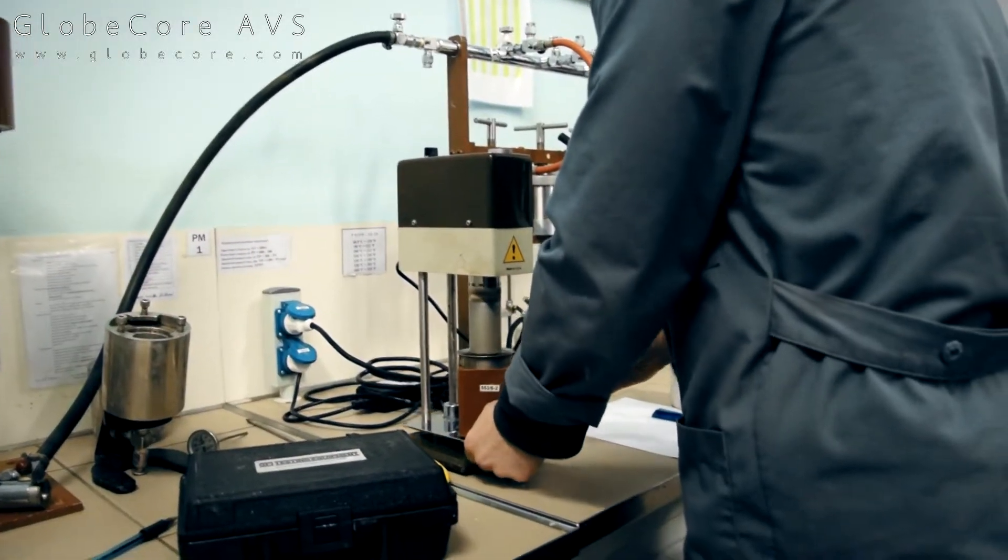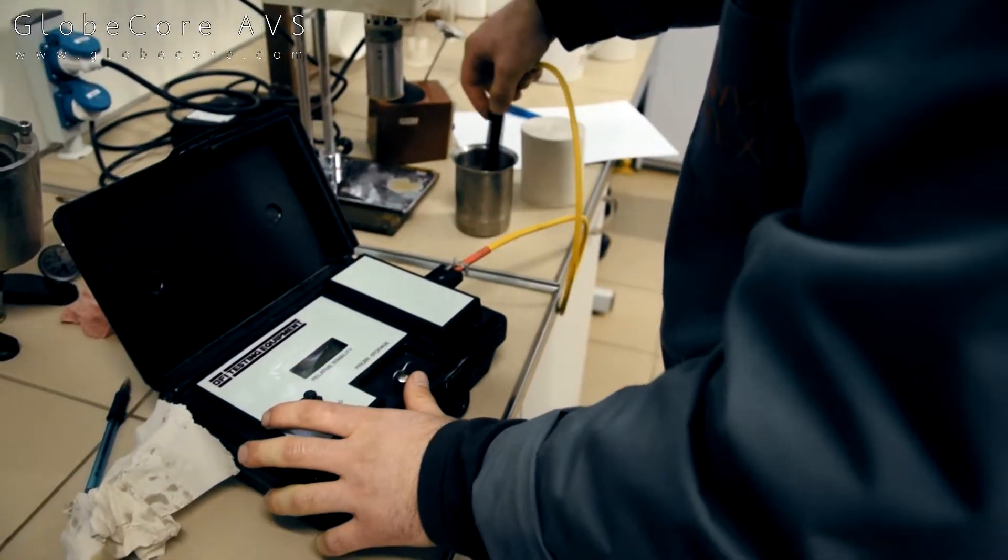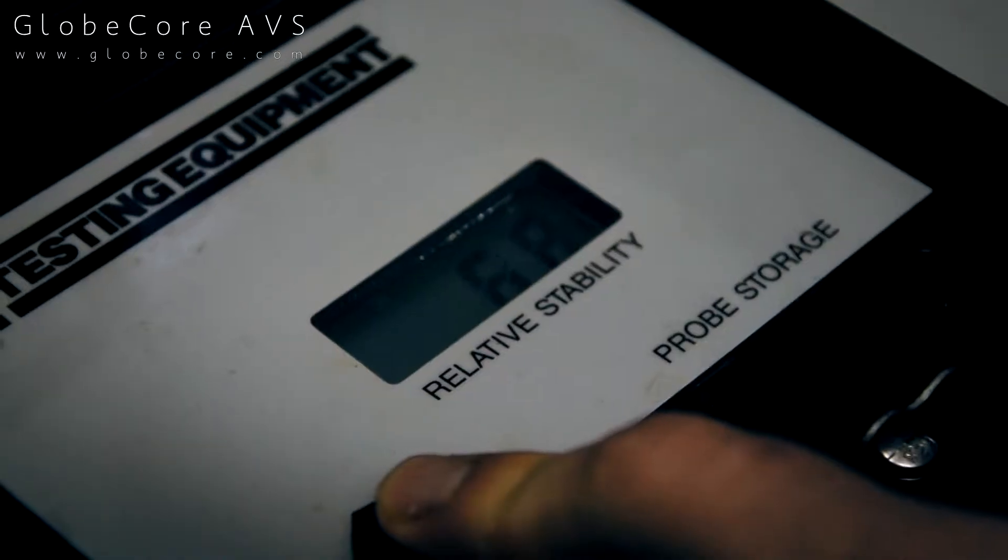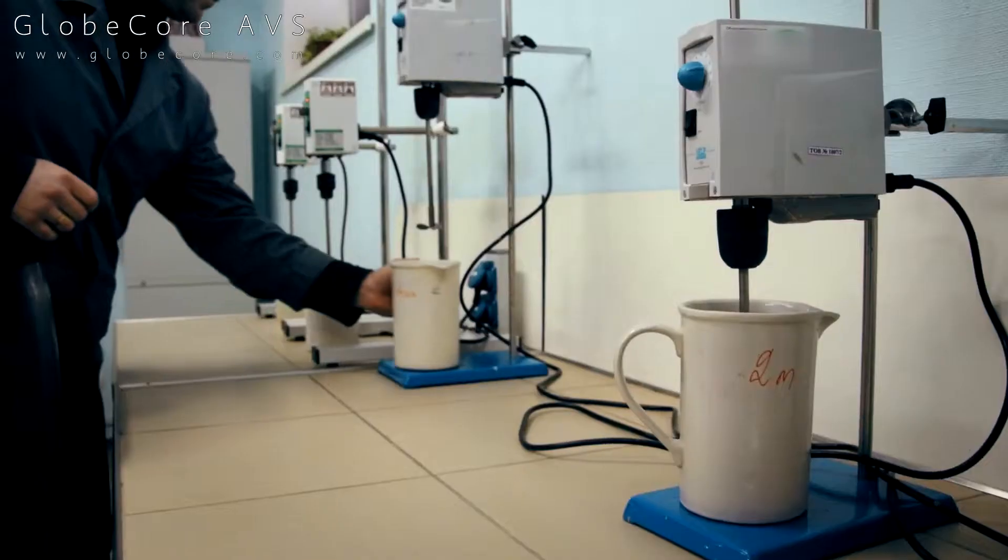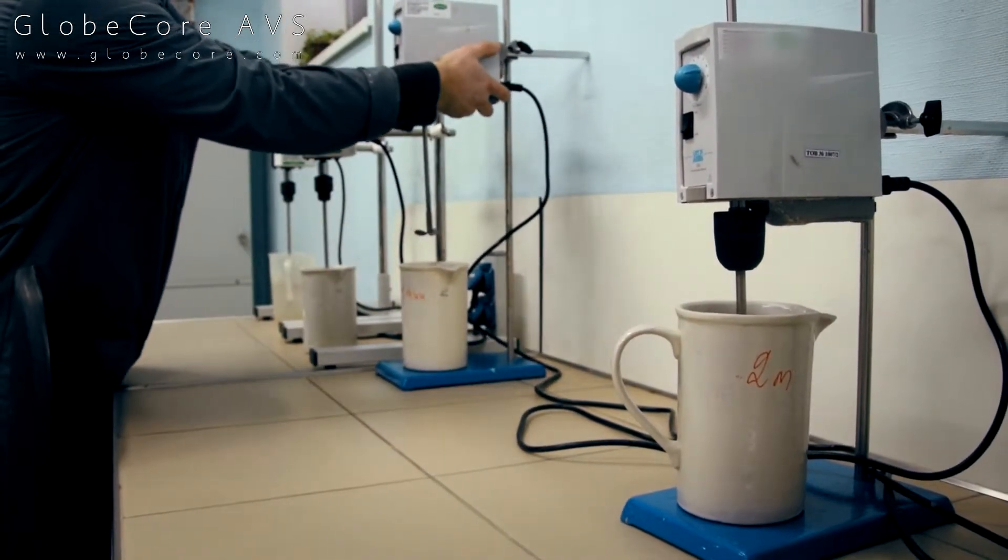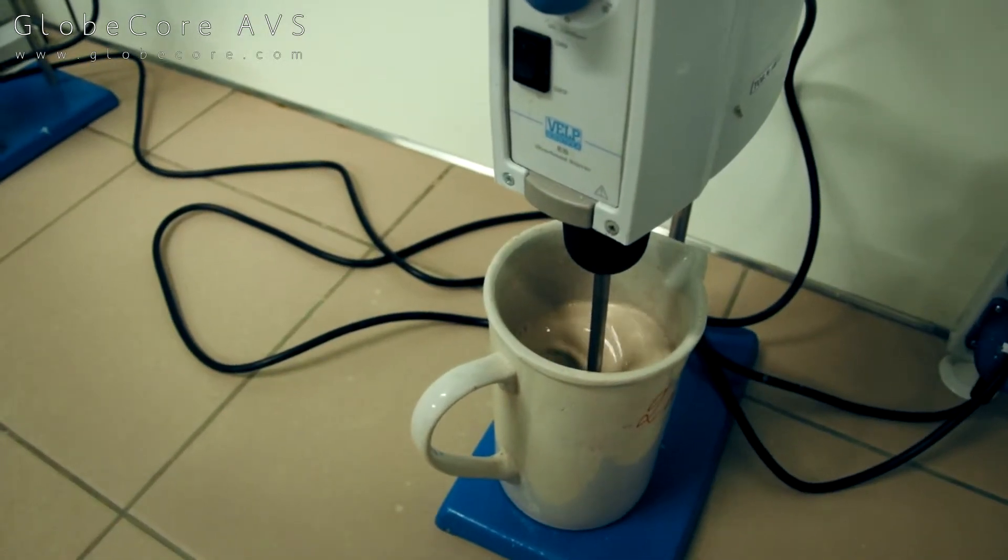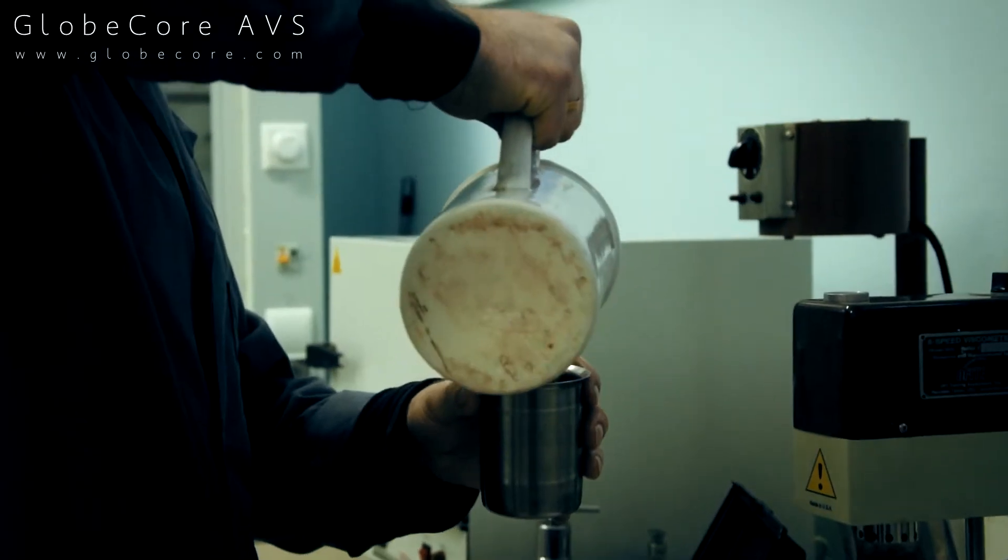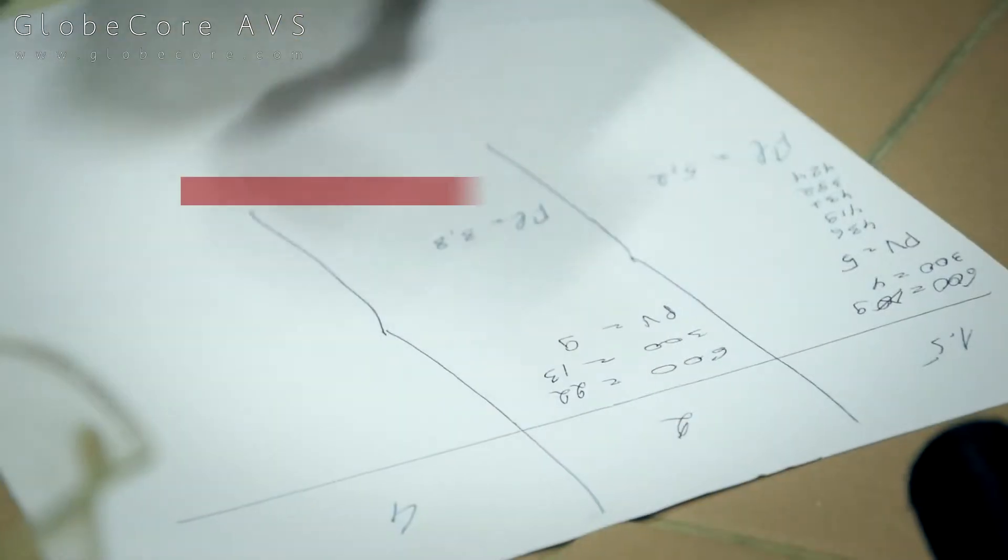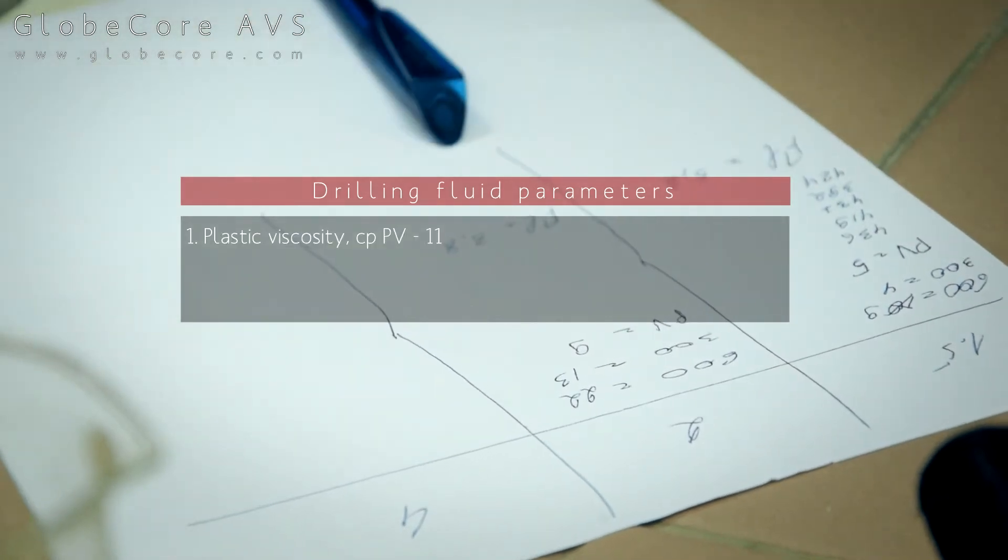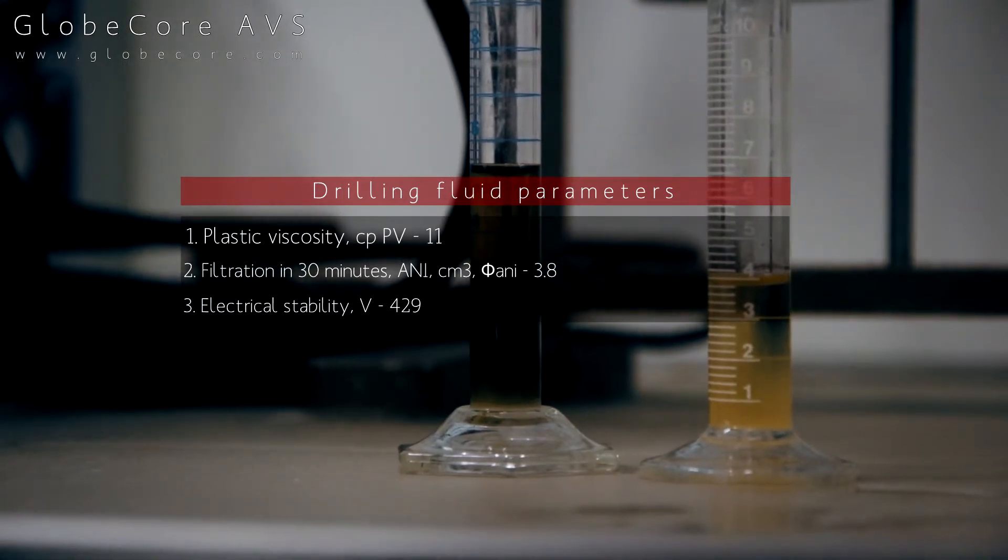We also tested electrical stability and the density of the solution. We received the following results: plastic viscosity was 11 centipoise, filtration was 3.8 cubic centimeters, electrical stability was 429 volts, density was 940 kg per cubic meter. The production rate of the AVS-150 was 2 to 2.5 cubic meters per hour.